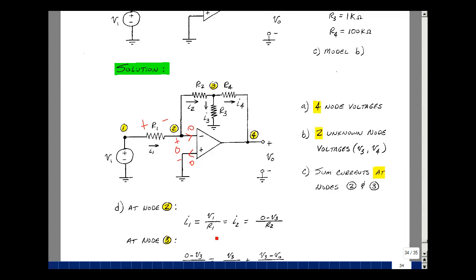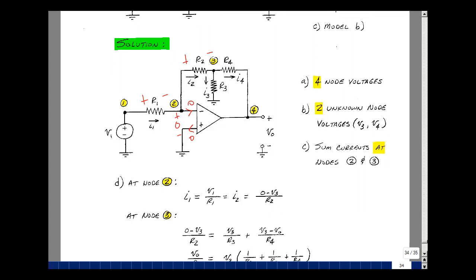The current I1 is just simply, this node voltage minus this node voltage divided by R1. But this is V1, and this is zero, and so V1 divided by R1 is equal to I1. Now there's no current in here, so that's also the value of I2. But I2 is the difference of these two voltages divided by R2, so it's zero minus V3 divided by R2. Sum of the currents at this node. We have one equation in our two unknowns, which is V3 and V4, but only V3 is showing up so far. I need one more equation.